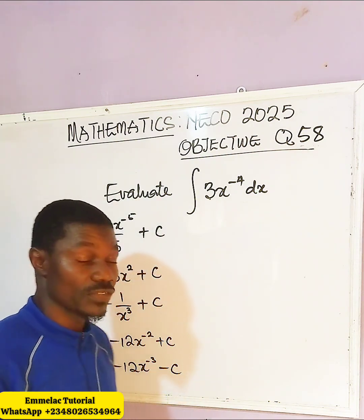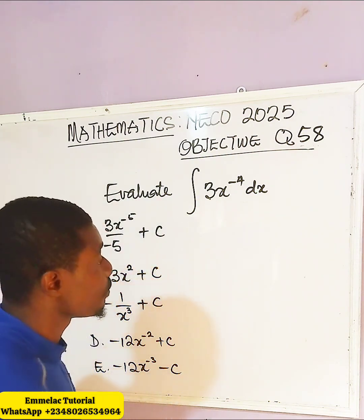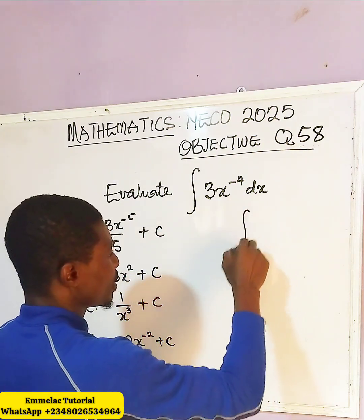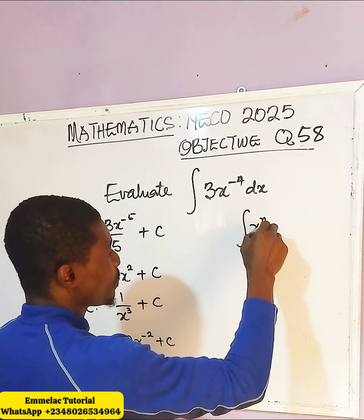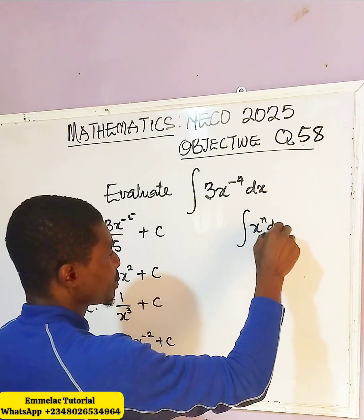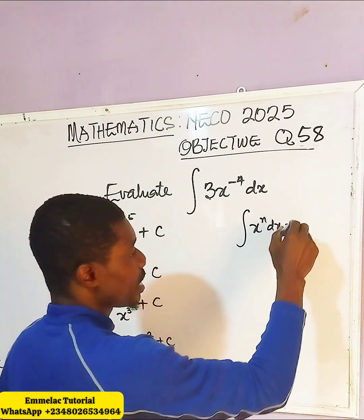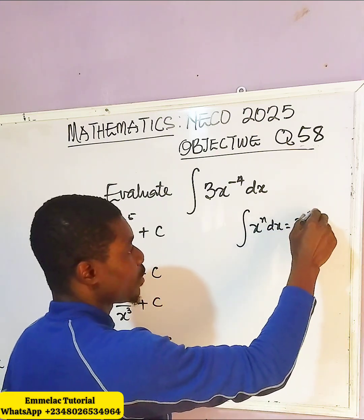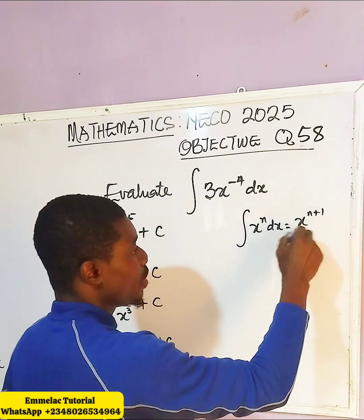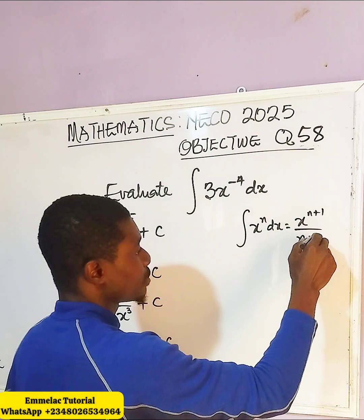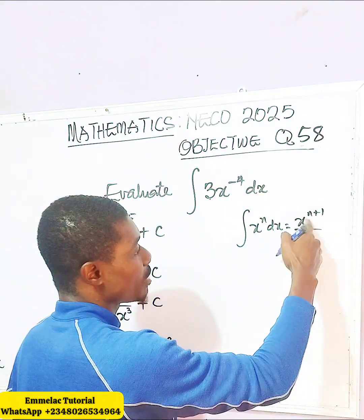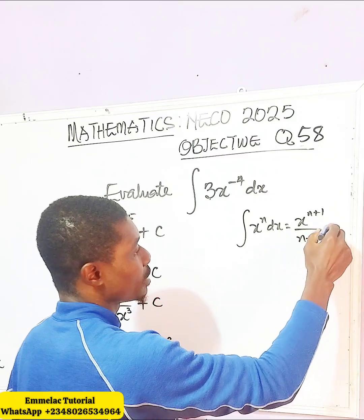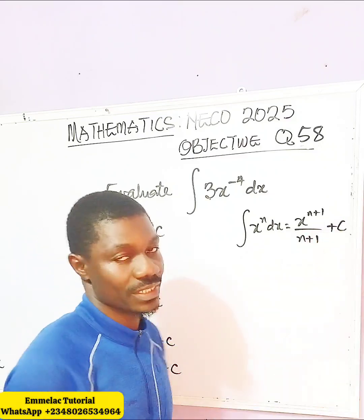Now generally, the formula for integration is: if you have the integral of x raised to the power of n dx, you get x raised to the power of n plus 1, all over n plus 1, then plus C.